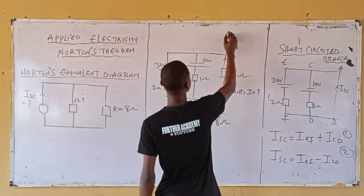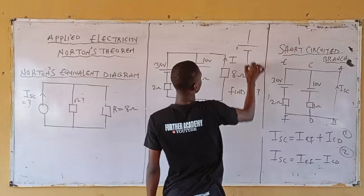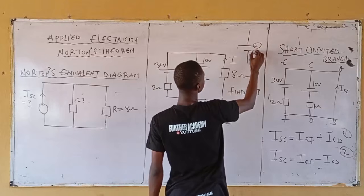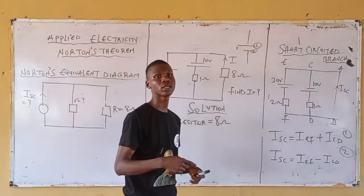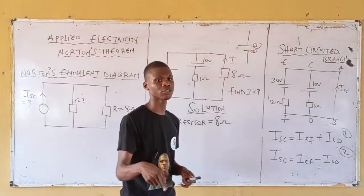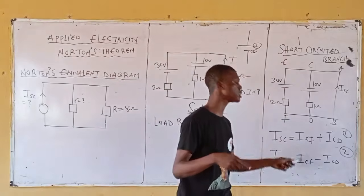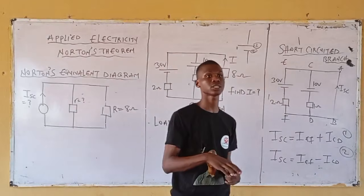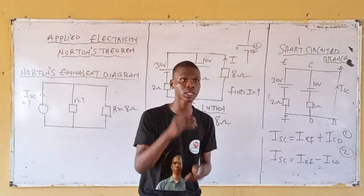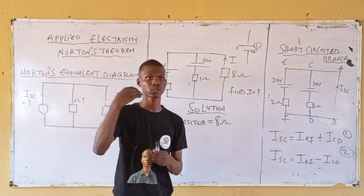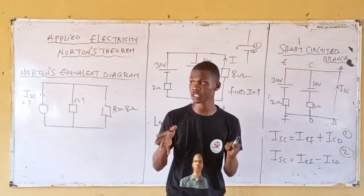Let's say you have your battery terminals labeled one and two. For branch EF, the terminal orientation is one-two. For branch CD, it is two-one — meaning they are different, so it becomes a subtraction. In a case where the orientation is the same — one-two-one-two or two-one-two-one — it becomes addition. So that is the concept, that is the logic.